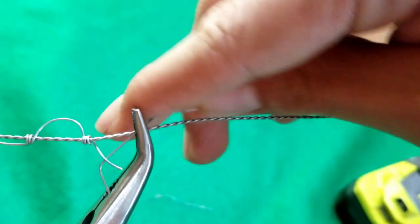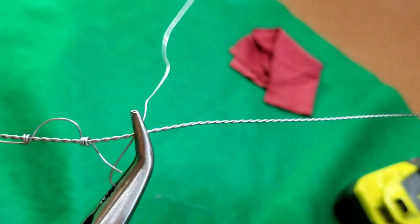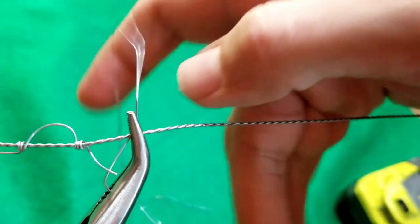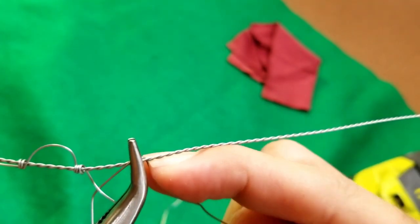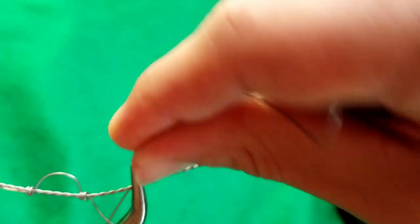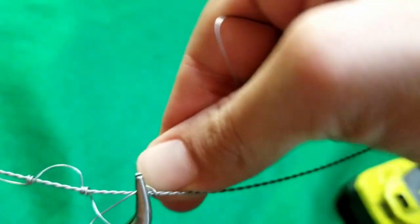All right, so you ran out of wire before you ran out of braid. Don't panic. Just get some more wire, use your pliers to clamp it to the braid, and start wrapping again like you did when you started. From there, it'll be the exact same as every other knot you've tied so far.